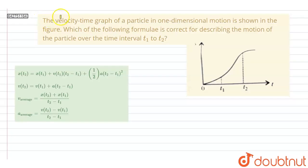Hello everyone. In this question we have the velocity-time graph of a particle in one-dimensional motion shown in the figure. Which of the following formula is correct for describing the motion of the particle over time interval t1 to t2? This is time interval t1 and t2 and we have to find which formulas are correct in these options. Also it is mentioned that this is one-dimensional motion.